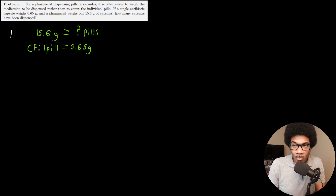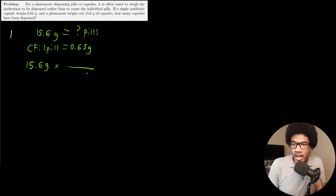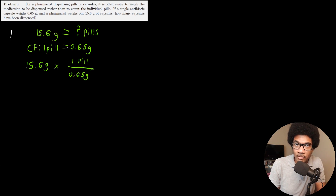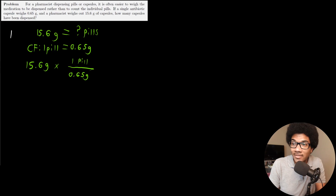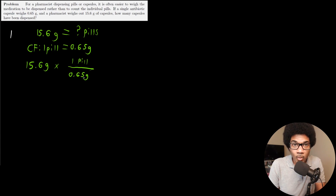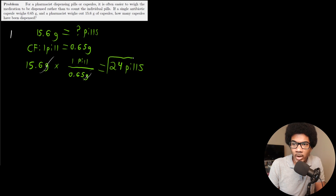We have 15.6 grams, and we know there are 0.65 grams for every one pill. In this case we divide by 0.65 — but if you set up the conversion factor so that units cancel out, you always get the right answer. Our grams cancel out, and we're left with about 24 pills as a result from 15.6 grams.